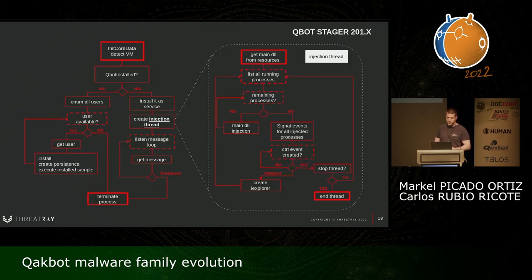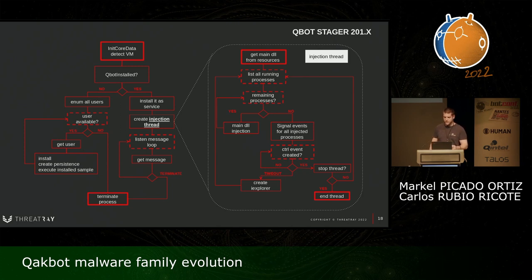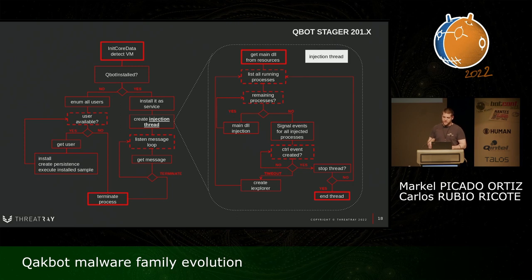This is how the stager works. At the beginning it does an initialization, detects virtual machines, and checks if Qbot is already installed. If not, it enumerates all the users on the machine, and tries to install, create persistence, and execute the installed sample. Once it is installed, it installs itself as a service, creates the injection thread, and keeps waiting for messages from that thread. That thread gets the main DLL from the resource, lists running processes, and tries to inject into those processes. It waits to receive a signal from the injected processes — once it receives that signal, it means the injection was successful. If it doesn't get that signal, it creates a child process, usually Explorer, and tries to inject into that child process.